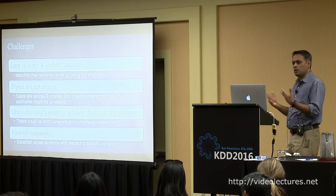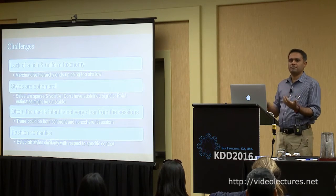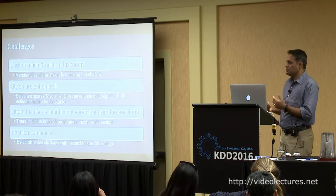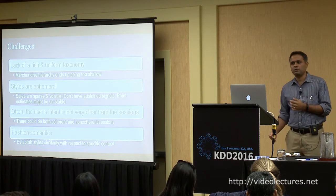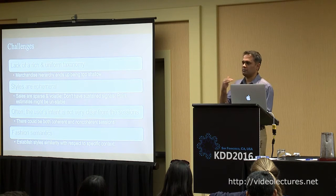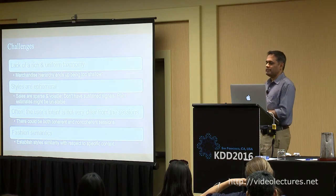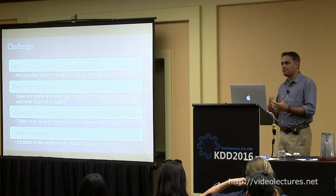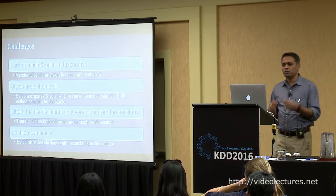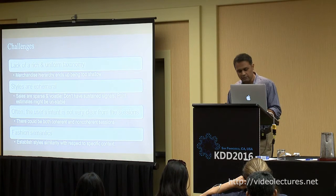A couple of other challenges in fashion: there isn't a rich and uniform taxonomy — the merchandise hierarchy is too shallow, with just t-shirts and then SKUs, and nothing in between. Styles are ephemeral, meaning signals are very sparse and point estimates are always unstable. User intent from sessions need not be cohesive — there could be coherent or incoherent sessions. Finally, you need to establish style similarity with respect to specific context.